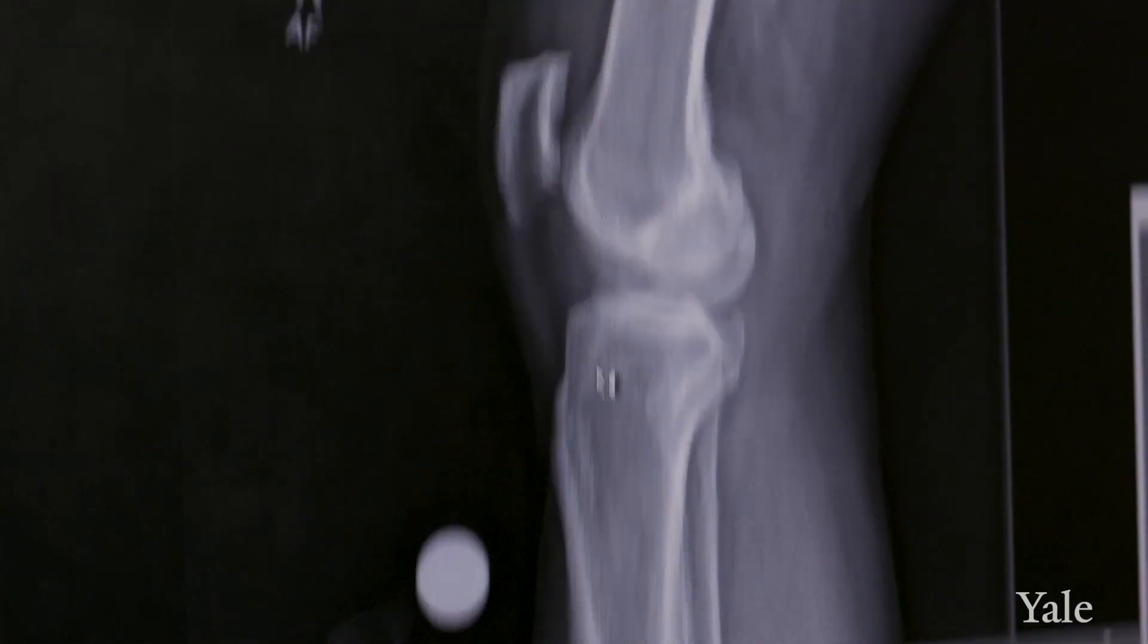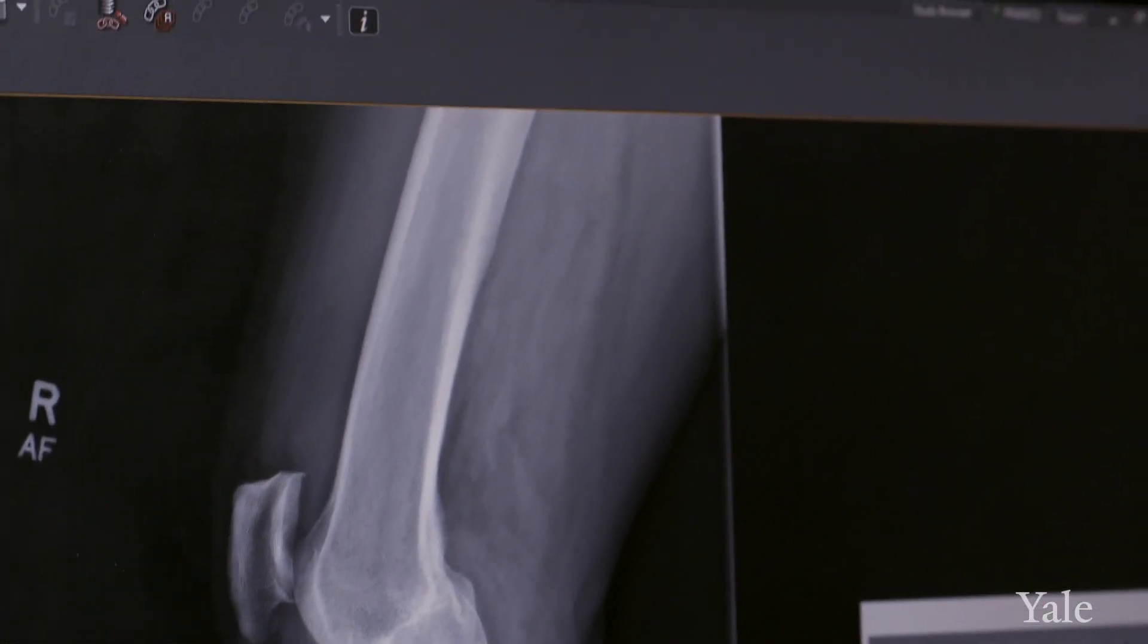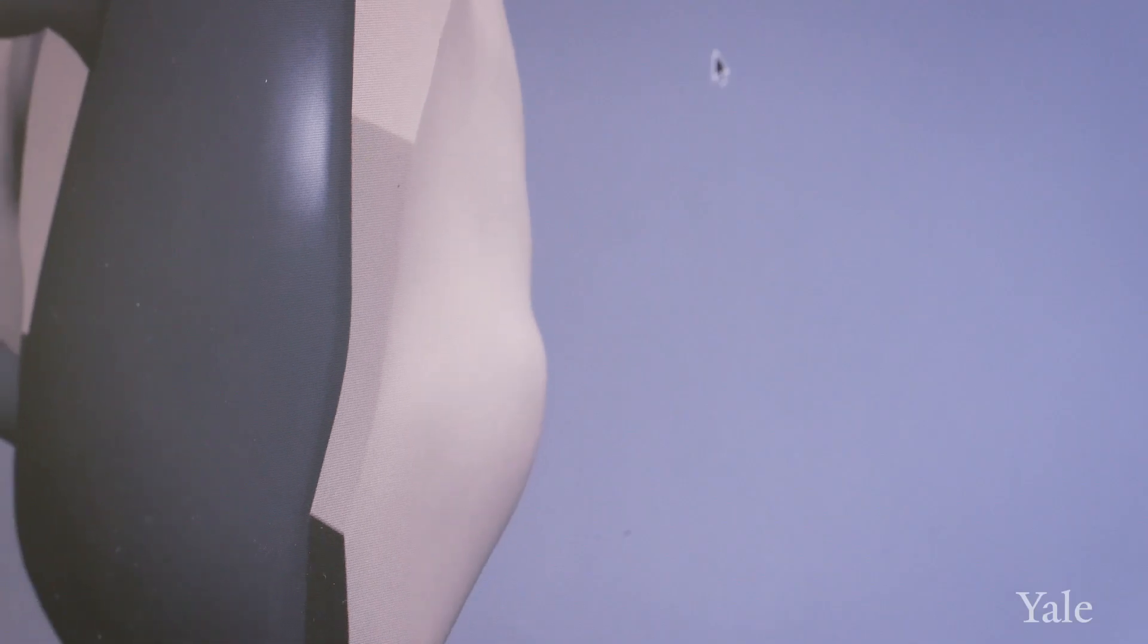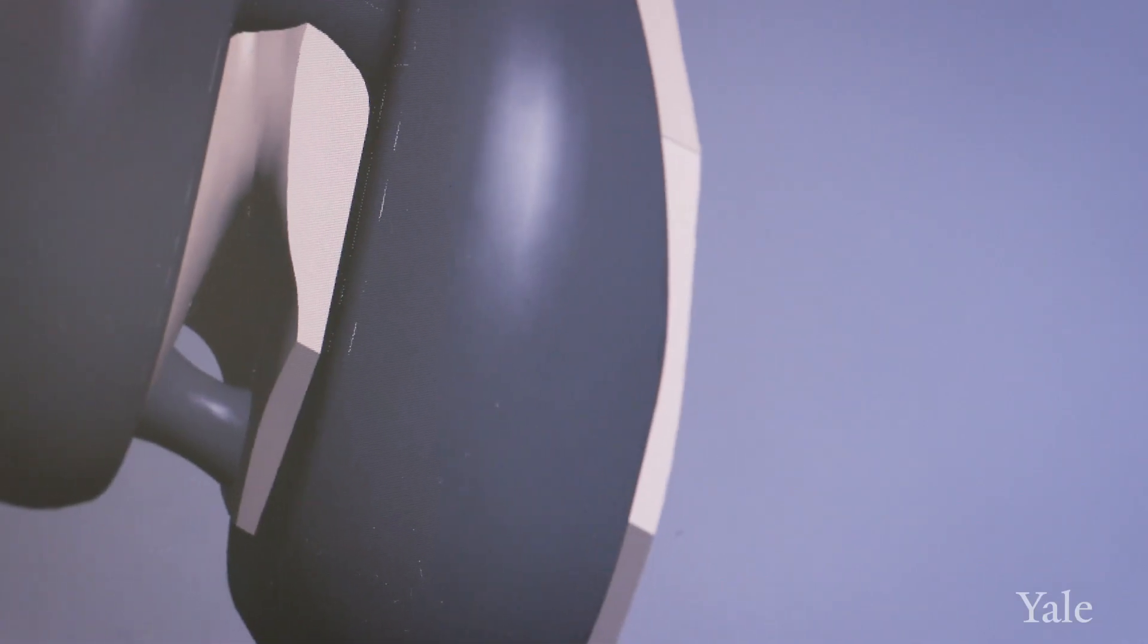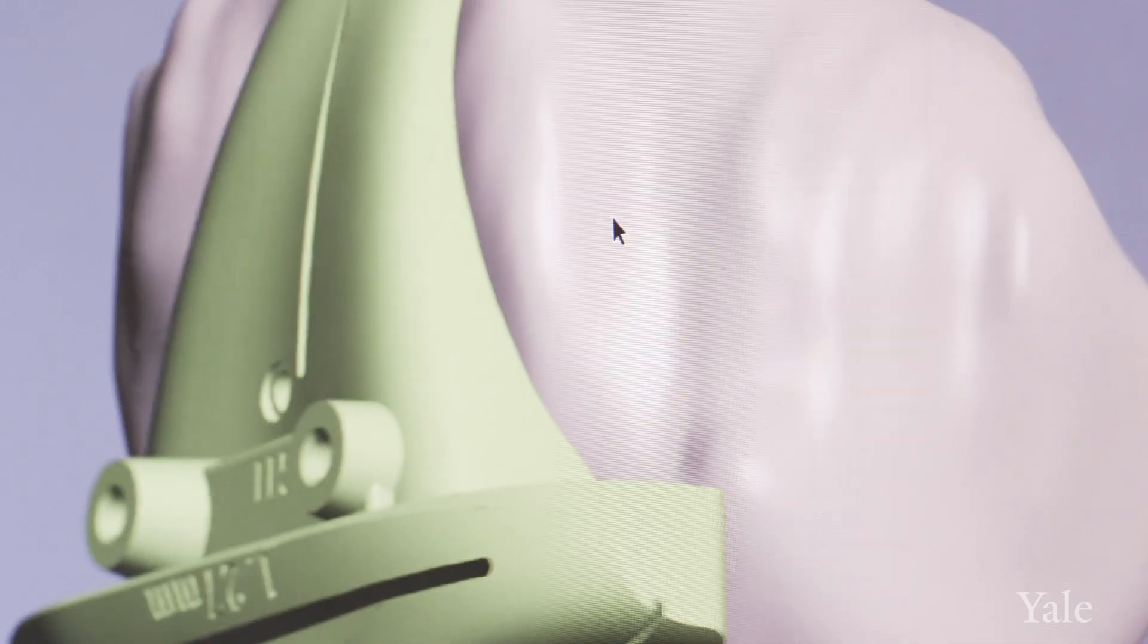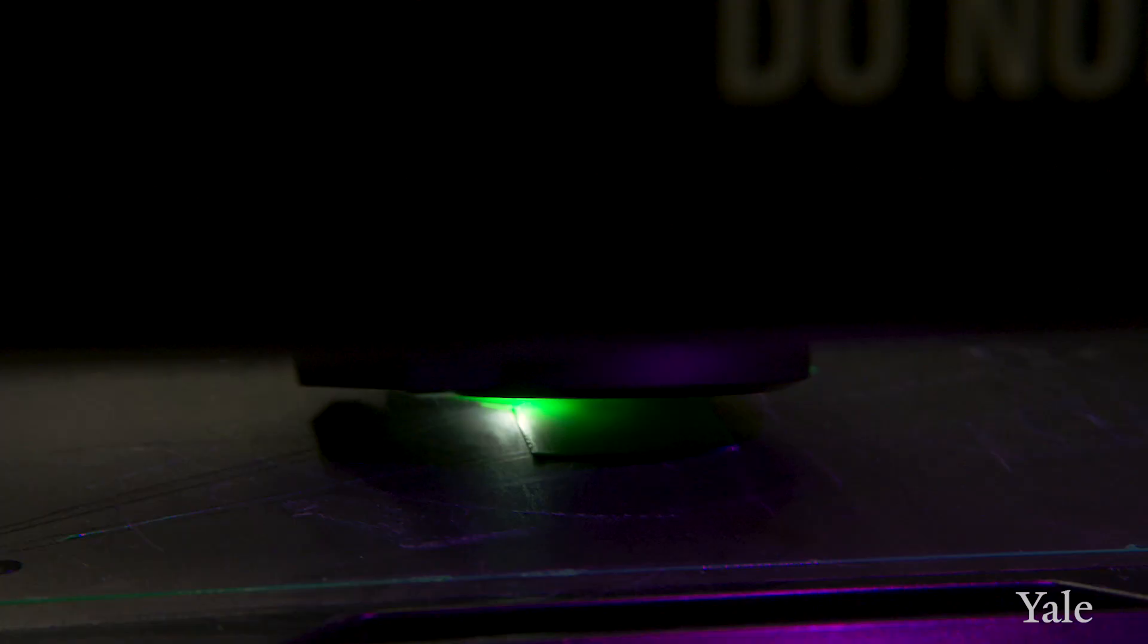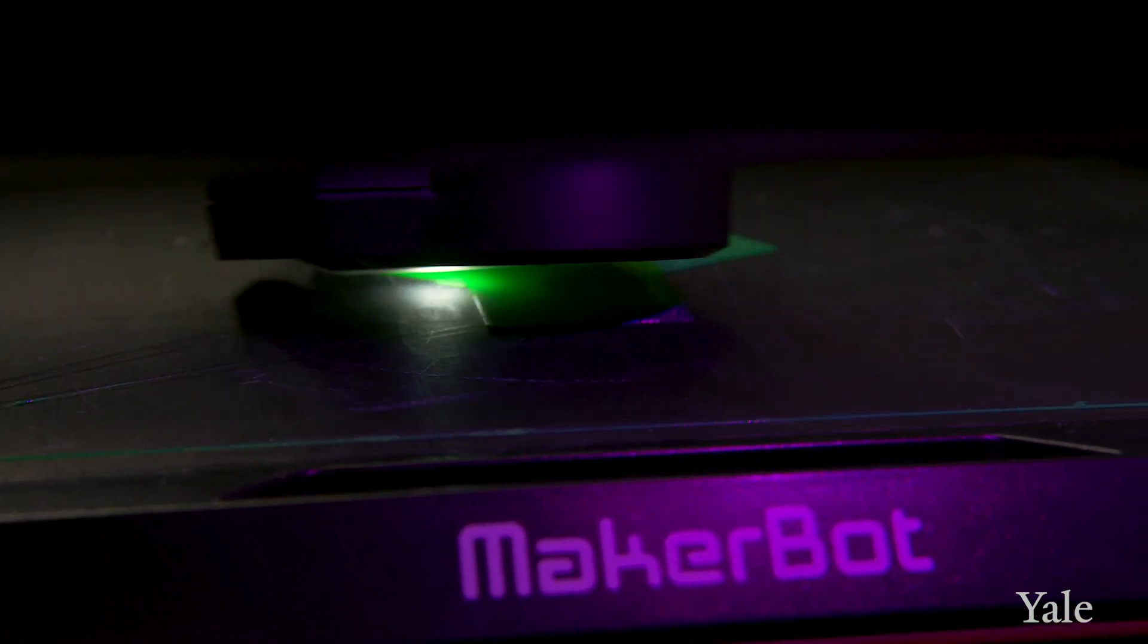I take a high resolution CAT scan or MRI and create a 3D representation of your joint. From that 3D representation, I'm able to model different implant sizes, positions, and orientations in your knee. I'm able to select the optimal position of those components and then construct 3D printed custom instruments for your joint.